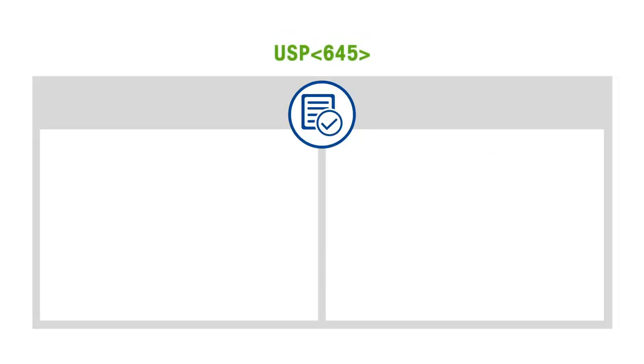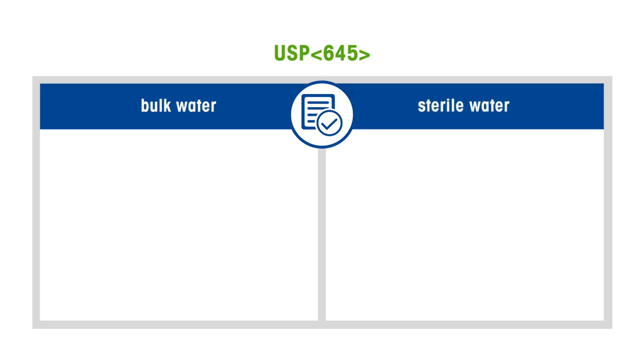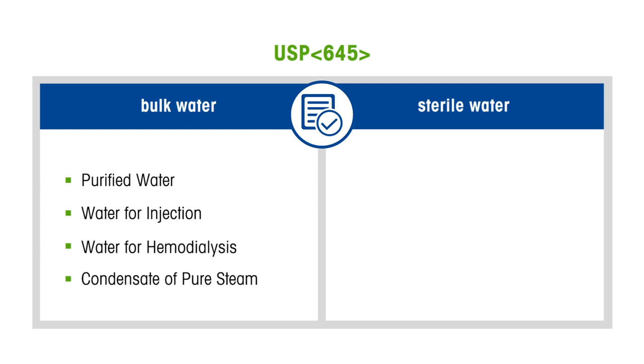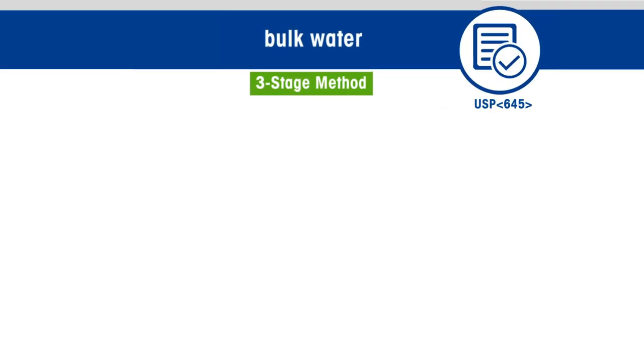The United States Pharmacopoeia 645 chapter defines the suitability of bulk water and sterile water samples through conductivity readings. The procedure mentioned under the section bulk water applies to purified water, water for injection, water for hemodialysis, and condensate of pure steam. It is a three-stage method.